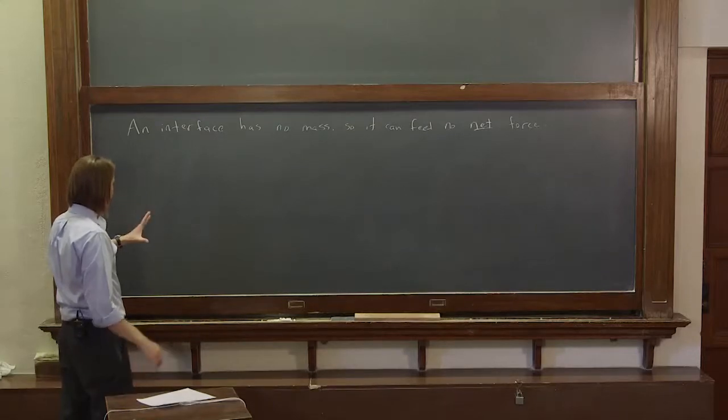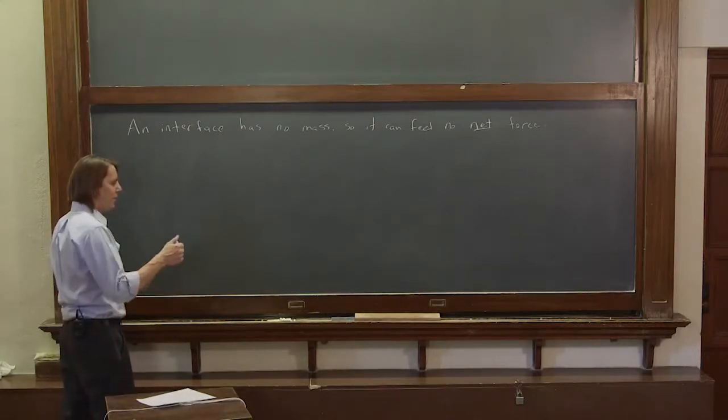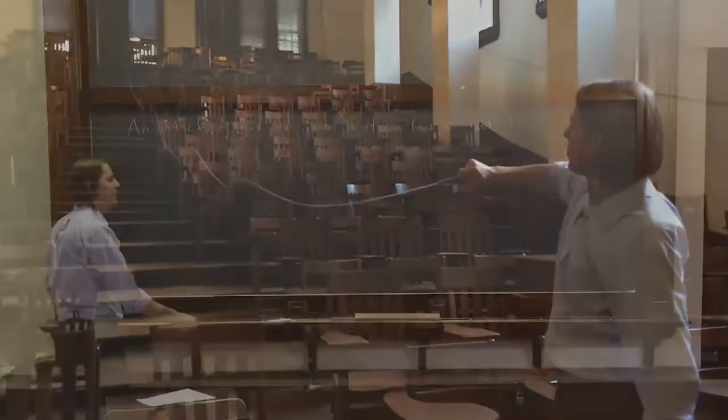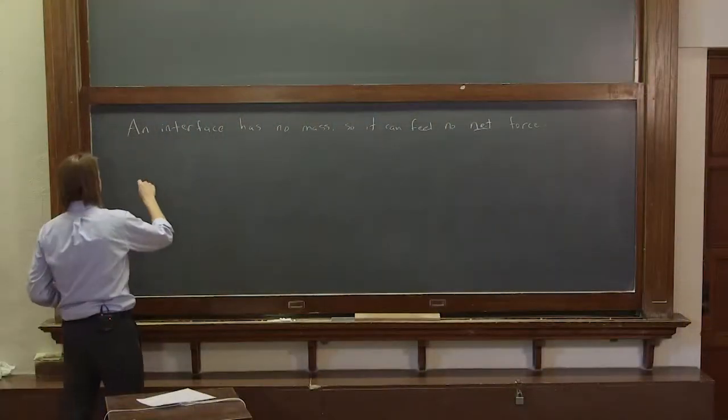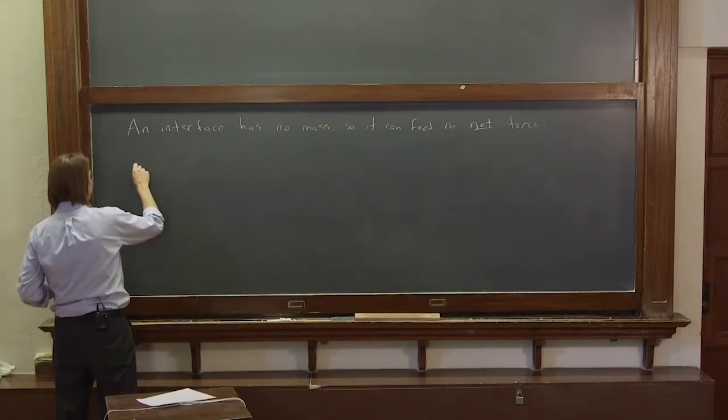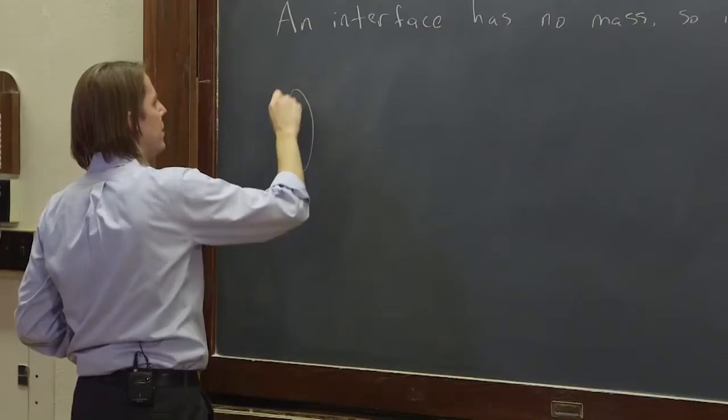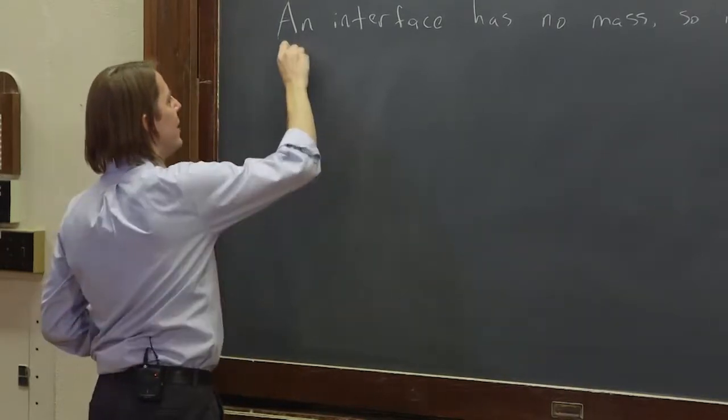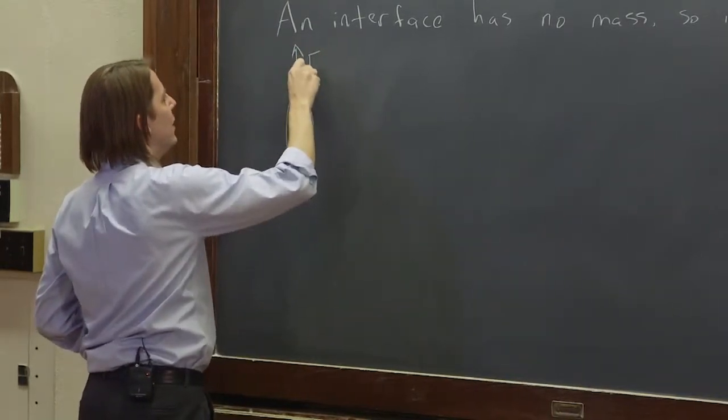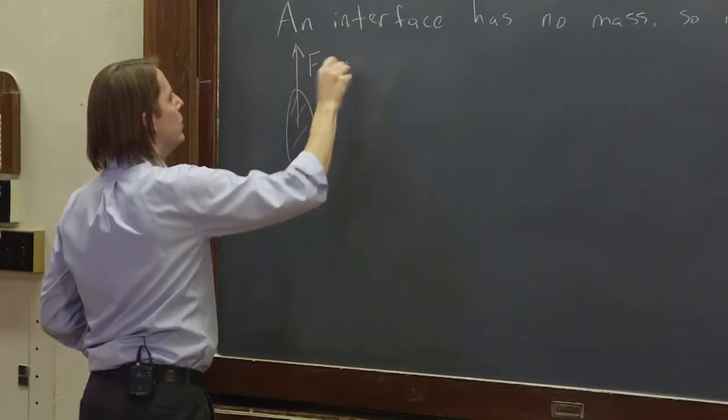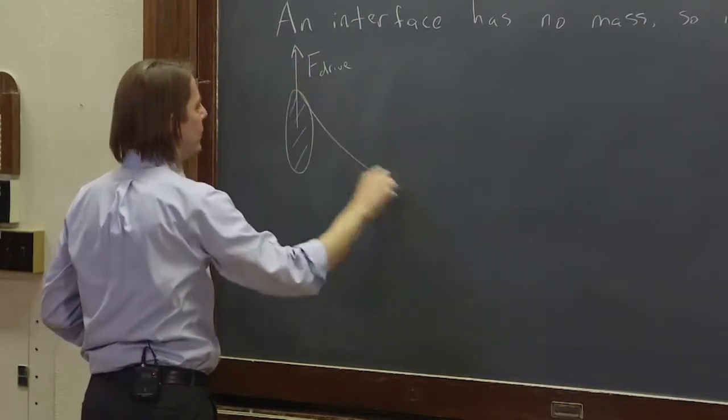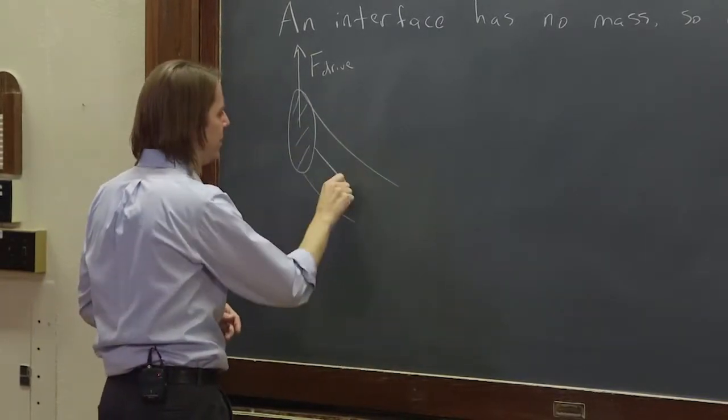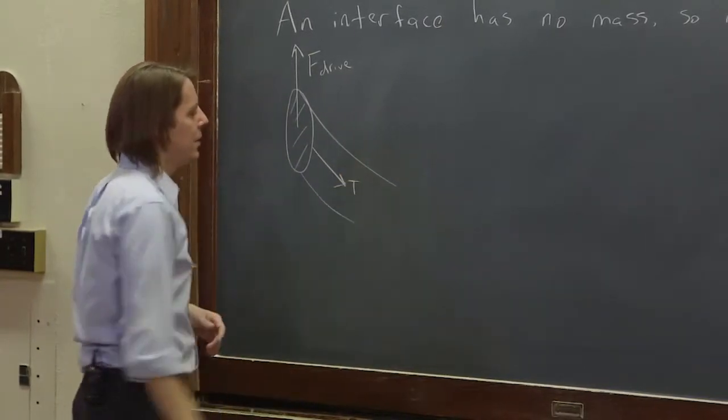So to start visualizing and thinking about this force, we want to think back to when we're driving a wave with our hand by holding the end. And let's think about the initial phase where you're pulling up. So the string, the edge of the string might look like that. Here's a cross-section of the edge of the string, and you're pulling up with your hand. So that is F drive. And the string is going to be pulled up, so it's going to curve down like that, so the tension will be like that.